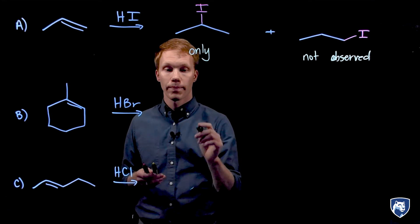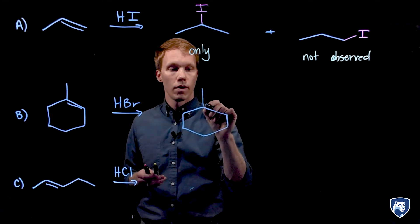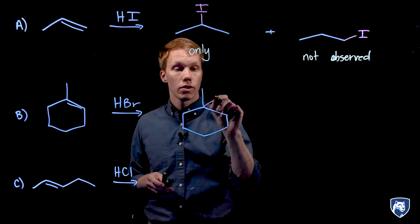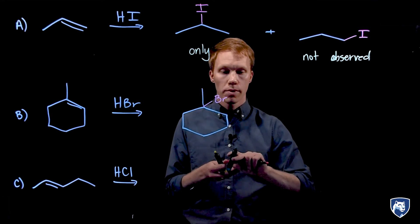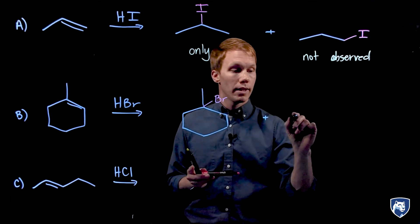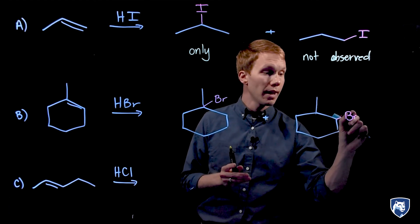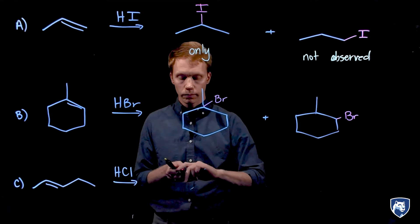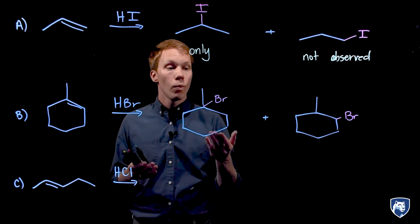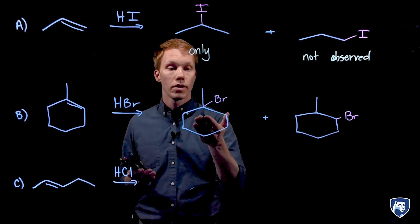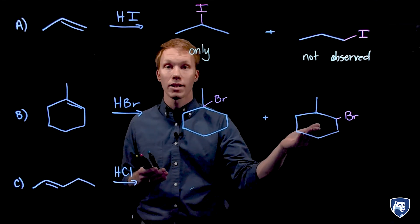Now let's look at example B. We can add this halogen to the more substituted carbon. Here it is tertiary with three alkyl groups. Or we can add the halogen to the less substituted site. Here it is secondary with two alkyl groups. Take a moment and predict based on some of the data that we've shared so far, which of these two products do you believe to be the major product in this reaction? The tertiary alkyl halide or the secondary alkyl halide?